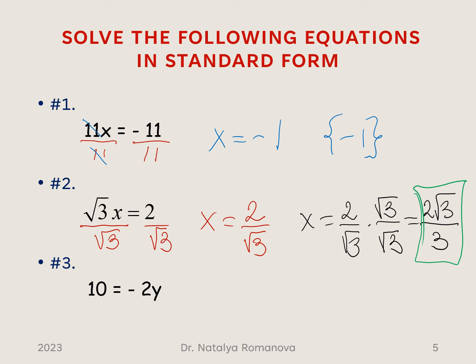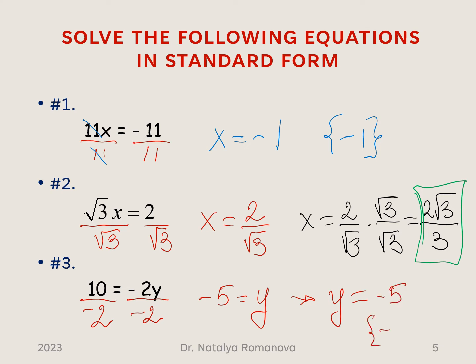For the next example, we divide both sides of our equation by negative 2. It gives negative 5 equals y, or equivalently y equals negative 5. The answer is negative 5.